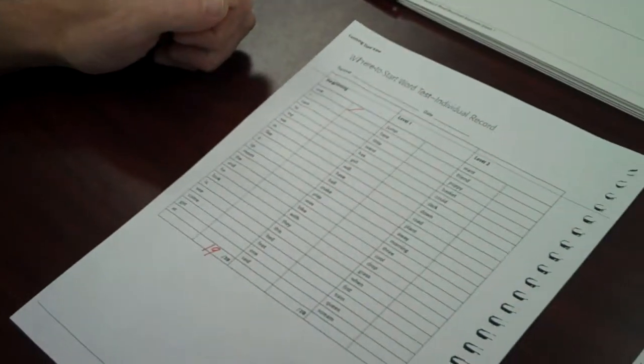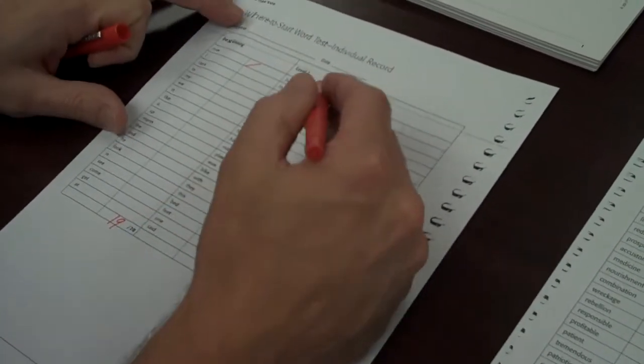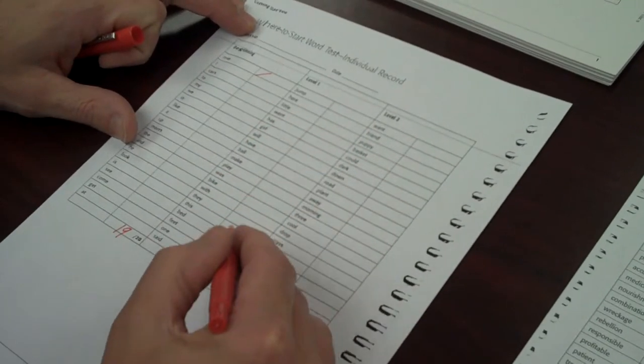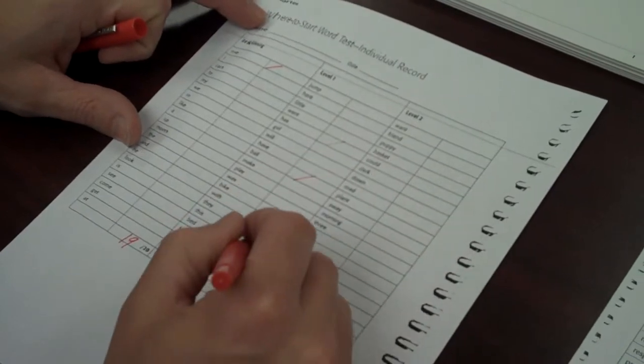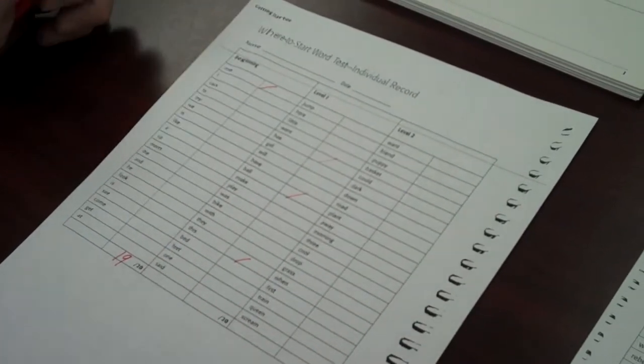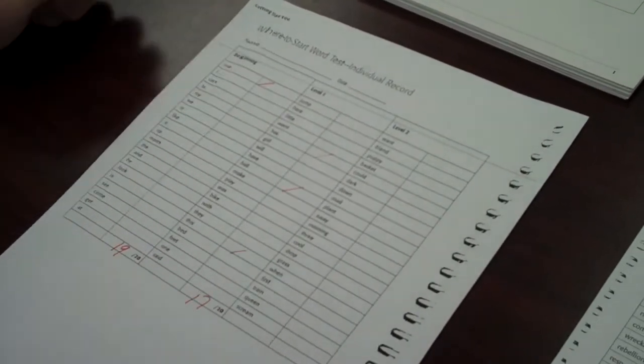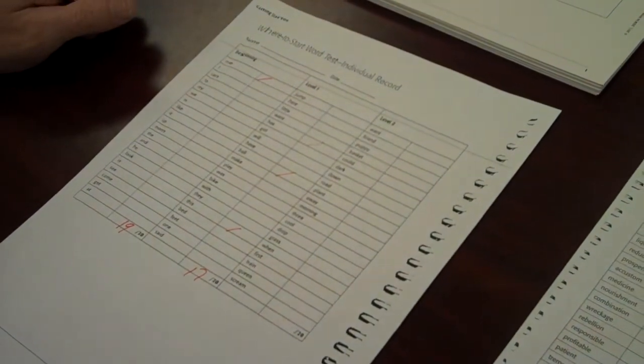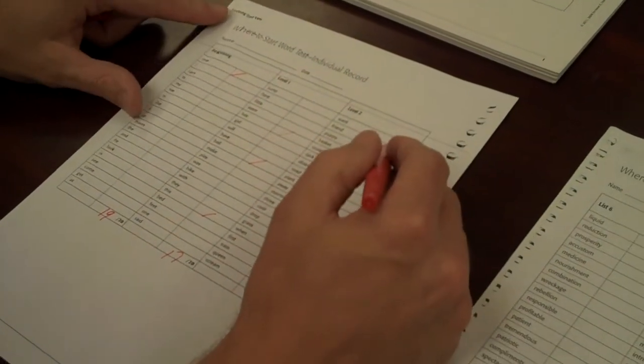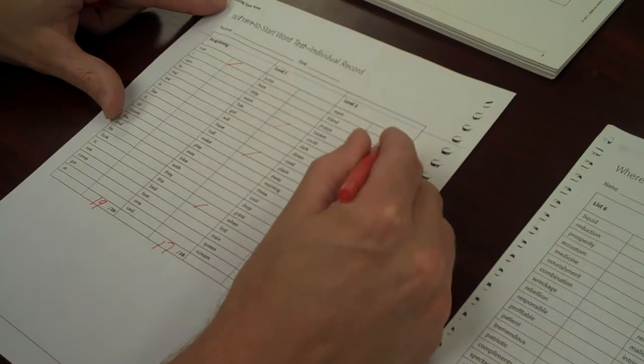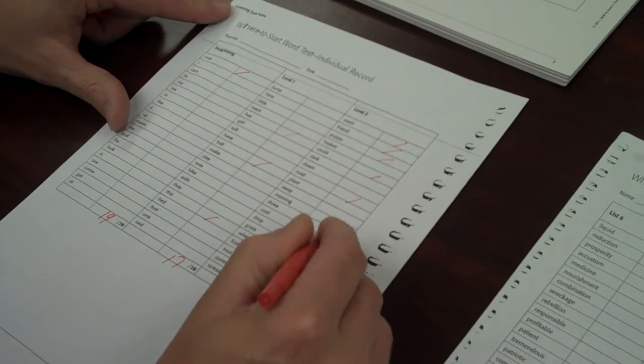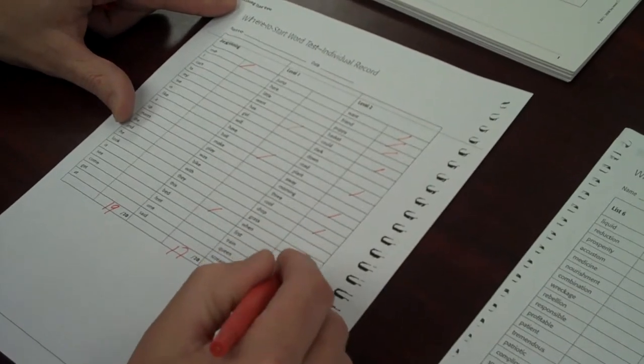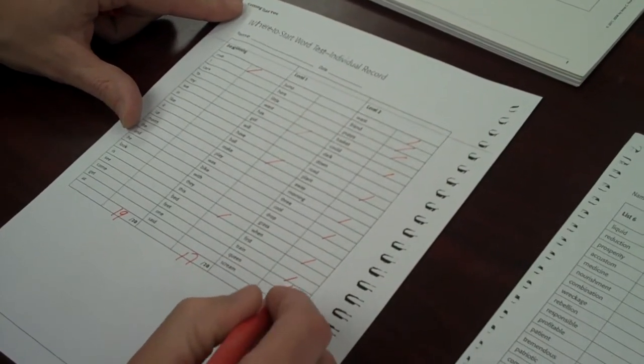Then you'd move on to the second list. You'd keep track of how many they missed on here. So let's say the student just missed a couple, maybe three. So this student got 17 of 20. Then they start reading at level 2 and they're missing a significant amount more than that. And again, this is just a hypothetical student that we're tracking.